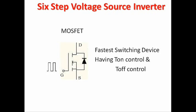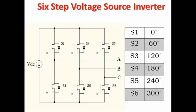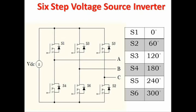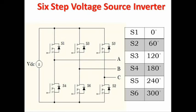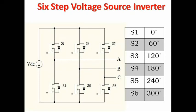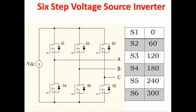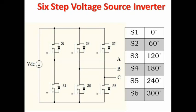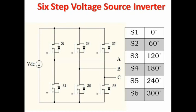Let me show the power circuit diagram for this inverter. This diagram represents the circuit for making the 6-step voltage source inverter. VDC represents the DC input source. S1 to S6 — totally 6 MOSFETs — are used here for producing a 3-phase square waveform as output.